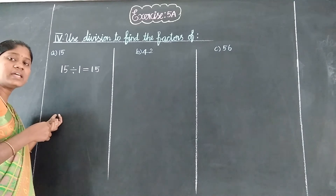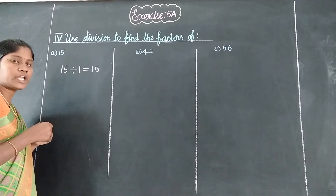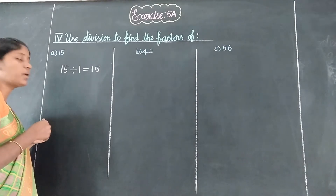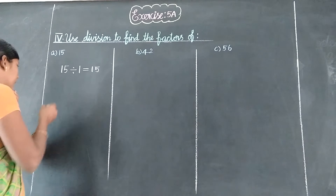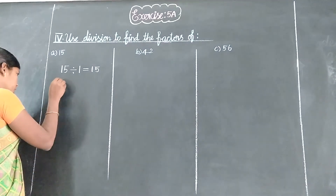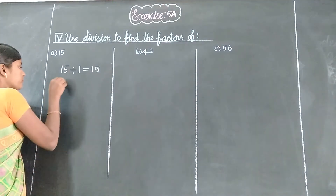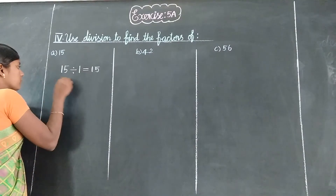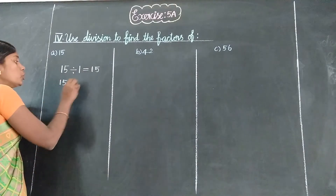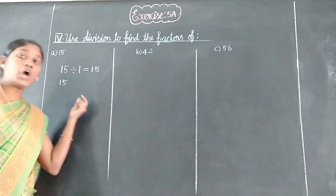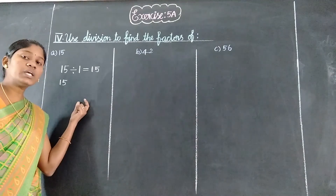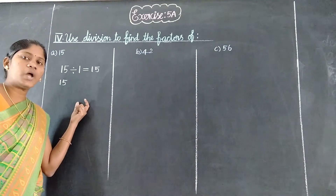Any number divided by 1 is the same number. 15 divided by 1 is equal to 15. Next, 15 is equal. 2 tables: divide.